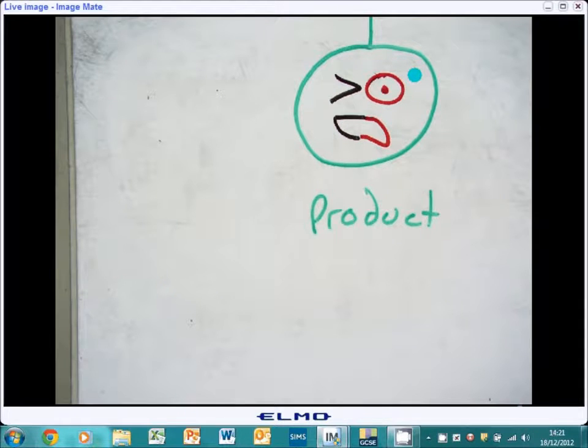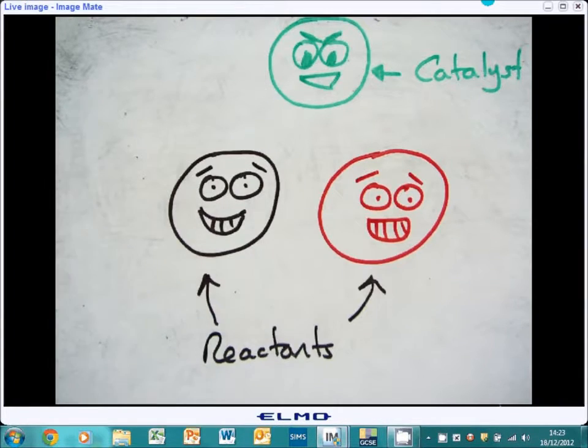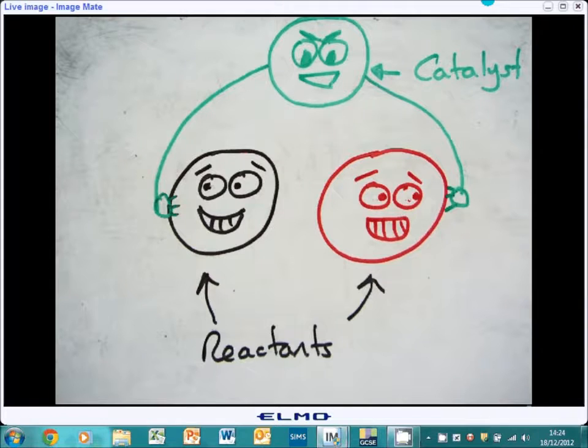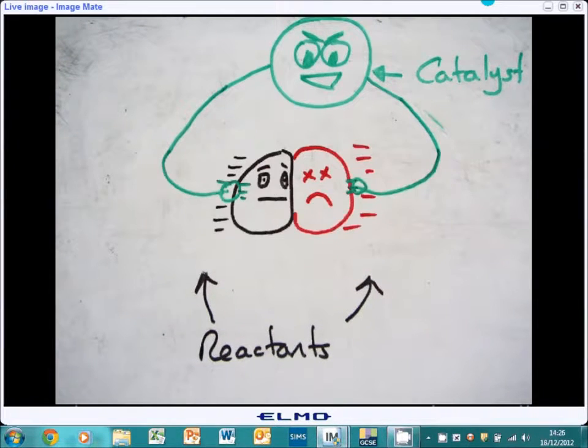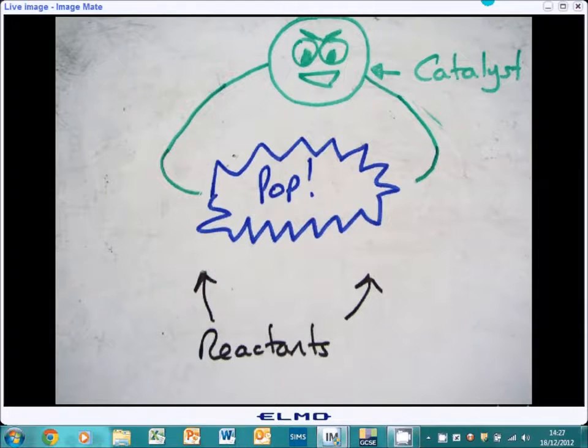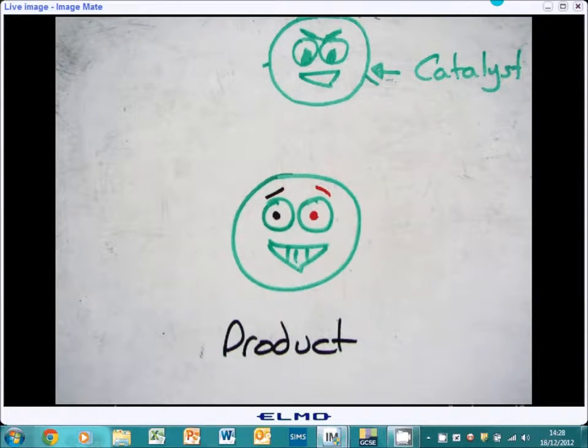The other thing that we can do is use a catalyst. What that does is it provides another route for the reaction to occur. So instead of two particles just bouncing into each other, think of it like this. So in this example here, we have two reactants. This reaction can still occur at low temperature, low concentration and low surface area, provided a catalyst is being used. The catalyst takes these two reactants and gives them another path to react. As you can see here, the product has been formed and the catalyst has remained exactly the same.